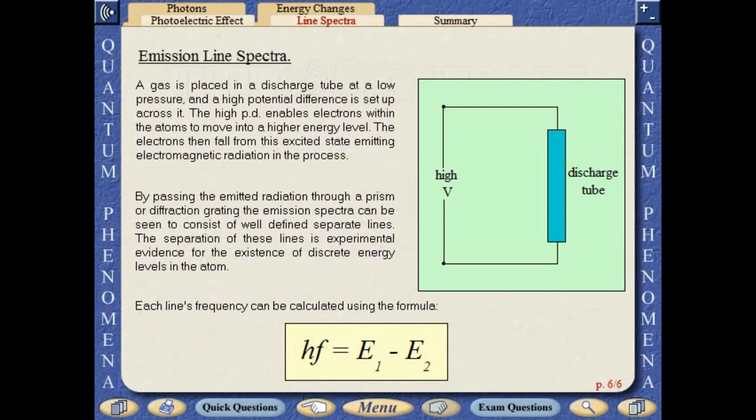By passing the emitted radiation through a prism or diffraction grating, the emission spectra can be seen to consist of well-defined separate lines. The separation of these lines is experimental evidence for the existence of discrete energy levels in the atom.